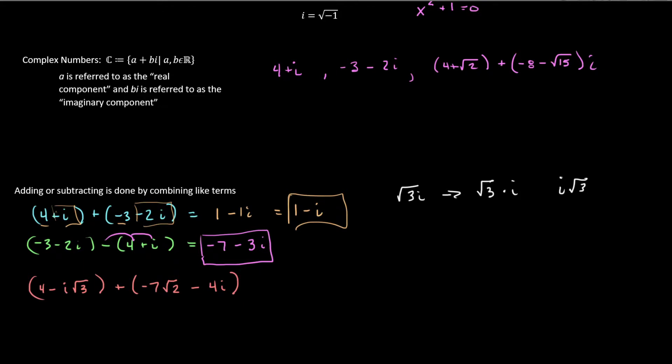However, when you're combining these, you've got to be extremely careful and notice that the stuff in the front, the root 3 is technically in the front, but the stuff in the front is the stuff that's combined. So if I were to do this, I take my 4 from the real component and add that to negative 7 root 2. That's going to give me 4 minus 7 roots 2.